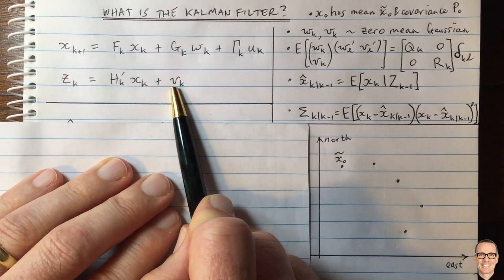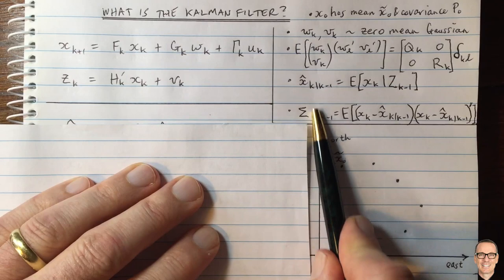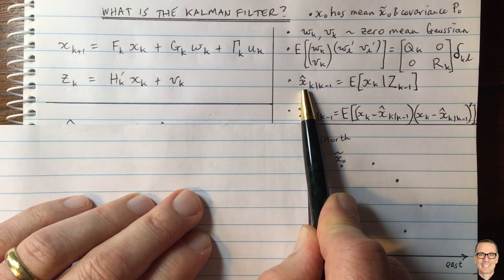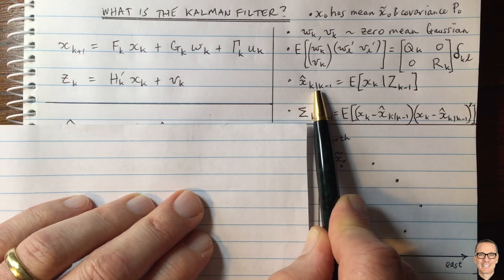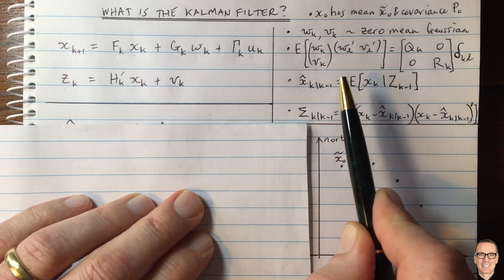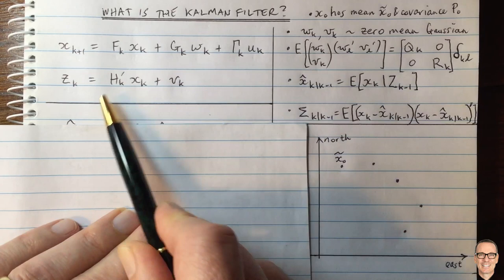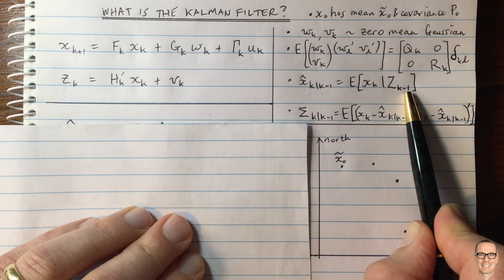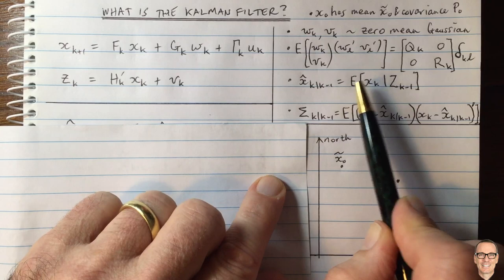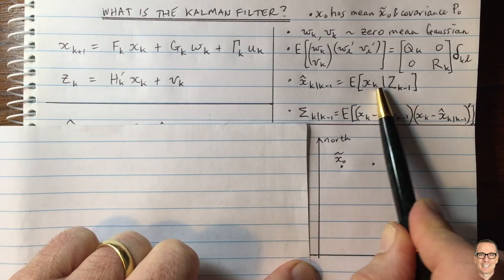Here is our estimate — this is what the Kalman filter is going to be calculating. We use a hat over X to represent an estimate. This notation means the estimate of X at time K given all of the observations up to K minus one, defined as the expected value of X-K given the collection of all measurements up to time K minus one. In the ship example, this is our expected location given all observations we've made up to time K minus one.